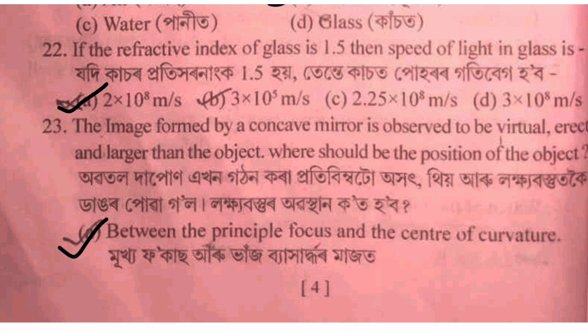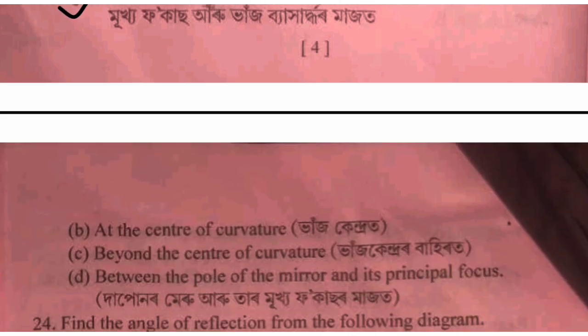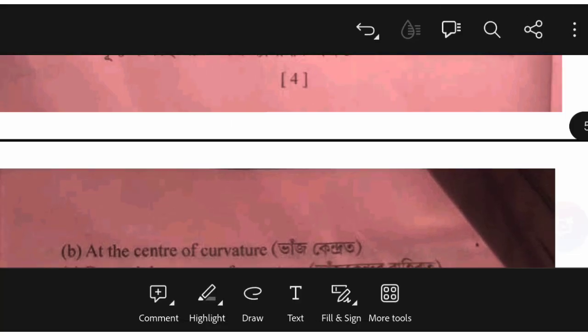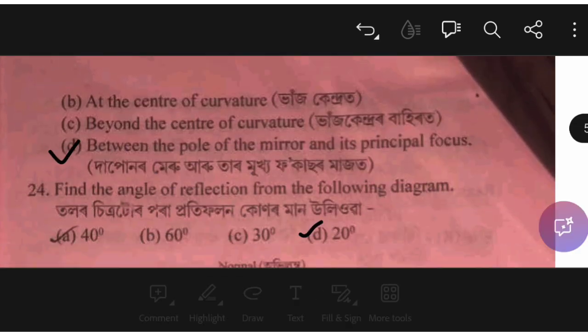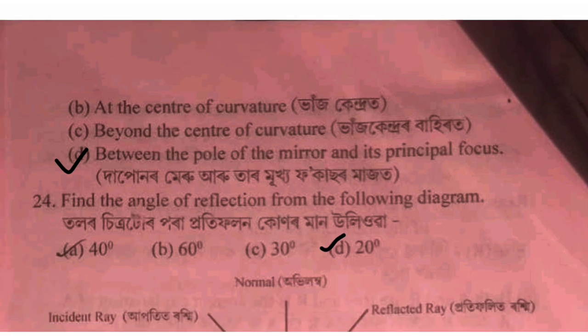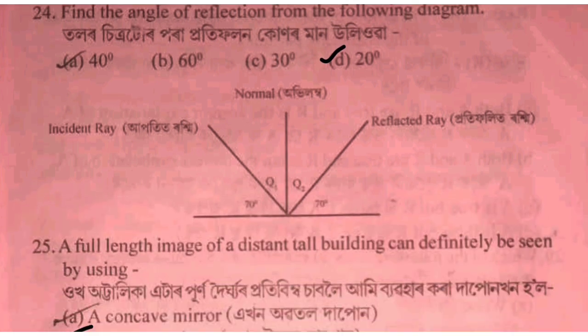For the mirror focus problem: if the object is placed at a certain position, we look at whether the image is real or virtual. The focal length is negative for a concave mirror. The focus is at Q1 or Q2 depending on the object position. We need to determine the correct option.